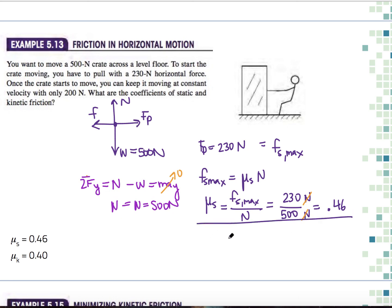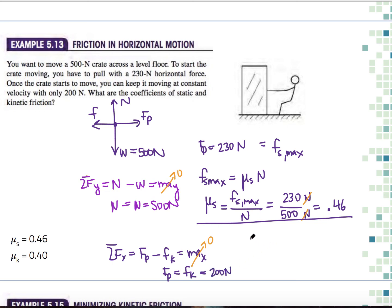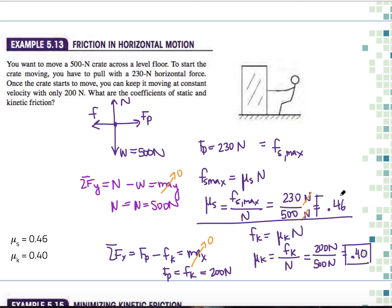Now for the coefficient of kinetic friction: once the crate is moving, it can be kept moving at constant velocity with 200 newtons. Since acceleration is zero, the net force is zero, meaning the pulling force equals the kinetic friction force: 200 newtons. So mu_k equals 200 divided by 500, giving a coefficient of kinetic friction of 0.40. The final answers are mu_s equals 0.46 and mu_k equals 0.40.